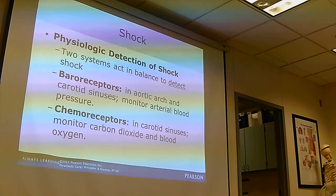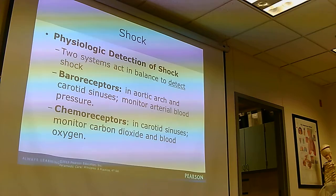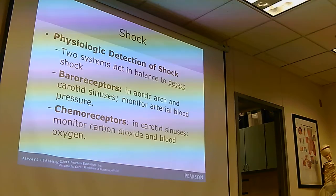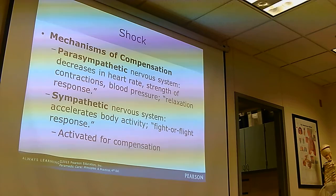We talked about baroreceptors - pressure sensors. There are also chemoreceptors, chemical sensors in the carotid sinuses. They measure oxygen, carbon dioxide, and that kind of stuff, and they'll help tell things to ramp up or not. It's just so you know that there are sensors throughout your body that help regulate things.